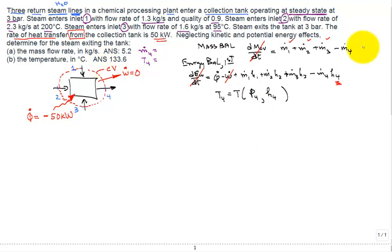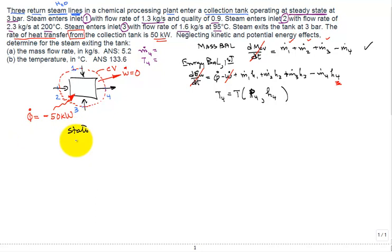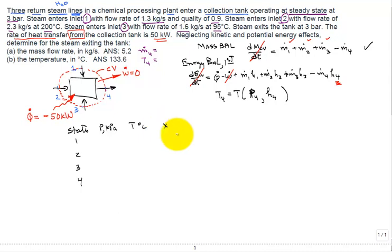To summarize the strategy: part A uses the mass balance; part B requires the energy balance then the state principle. To organize the information, use a table with columns for state (1, 2, 3, 4), pressure in bar, temperature in °C, quality, enthalpy in kJ/kg, and ṁ in kg/s.